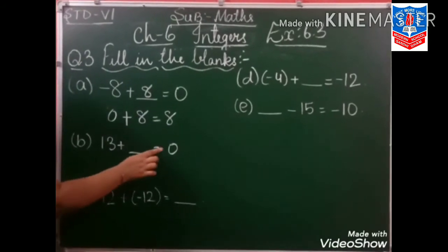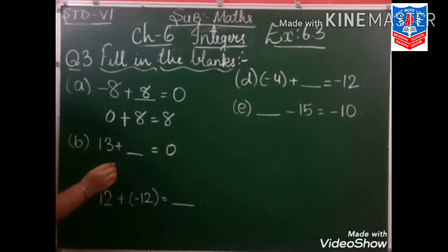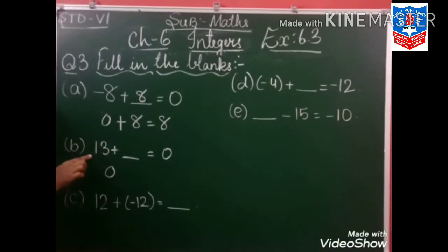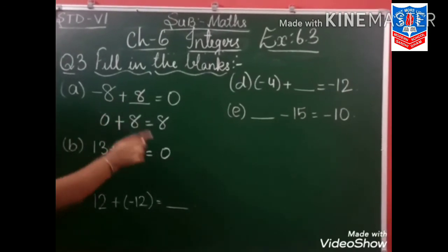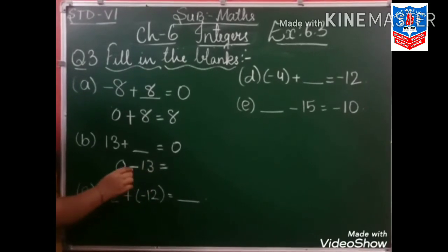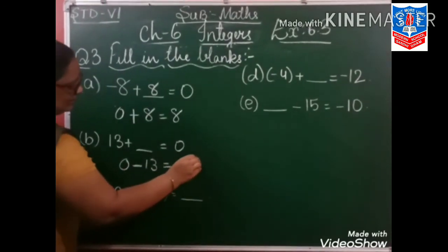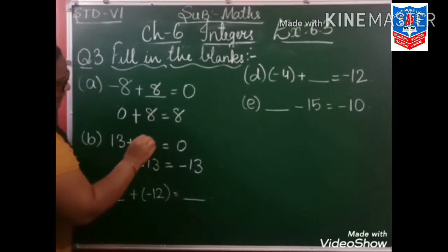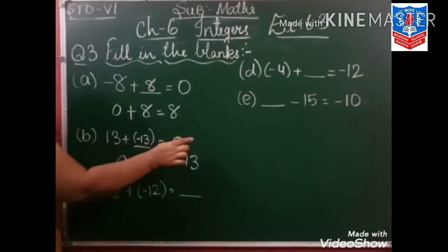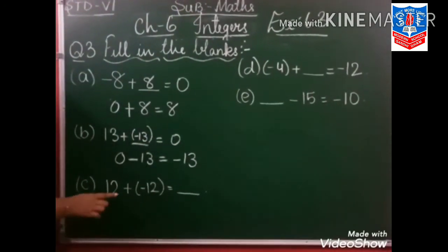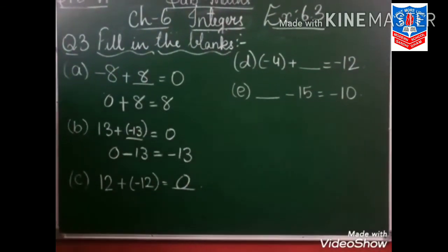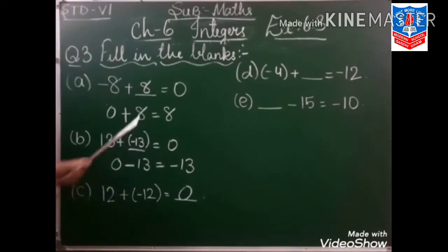Again: 13 plus dash is equal to 0. There is no sign here, so this is a positive integer. This plus 13 will become minus 13. So 0 minus 13 is minus 13 — our answer is minus 13. Verify: 13 plus minus 13 — minus, 13 minus 13 is 0. And similarly, minus 12 plus 12 is 0. Sum number D and E is your homework.